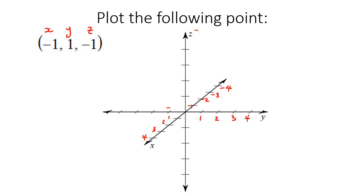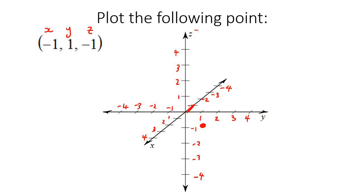So we're going to plot negative one on the X axis — that's going backwards one. You don't stop there; that's just the first step. Then we go one on the Y, so we go across one. And then we go down by one to Z of negative one. So I went backwards one on X, then one on Y, then one down on Z. Your final answer would be that dot — you've just plotted a point in three dimensions.